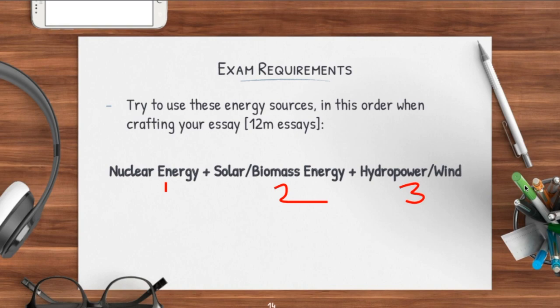For example, nuclear energy — you have the Chernobyl incident in Russia, and nuclear is also harnessed by the US. Solar energy is harnessed by Singapore; you have noticed a lot of HDBs have solar panels on top of them. Hydropower — China has a lot, including the Three Gorges Dam. These are examples that you can throw into your essay.